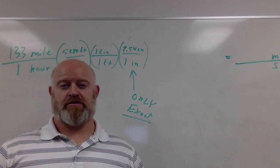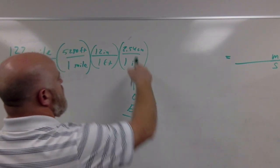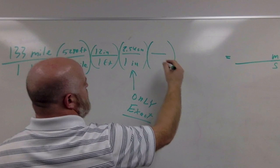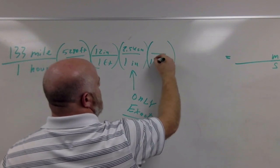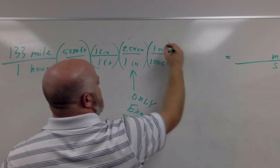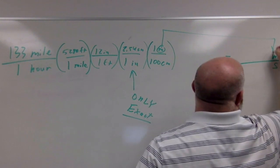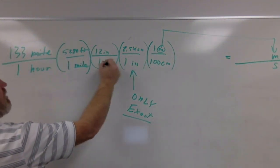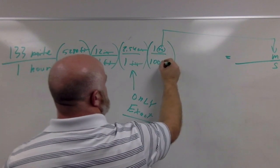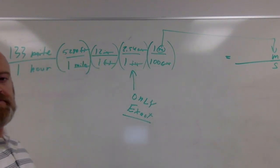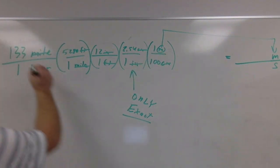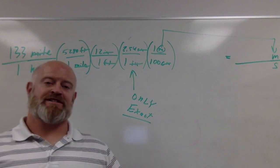I have centimeters, so I know that for every 100 centimeters I have one meter. I now have converted to meters. My miles have cancelled, my feet have cancelled, my inches have cancelled, my centimeters have cancelled. However, now my answer is in meters per hour, so I need to convert hours into seconds.